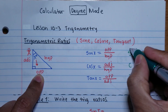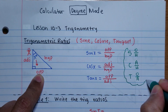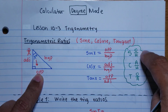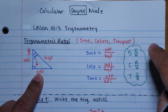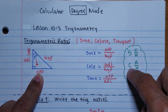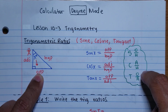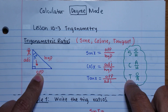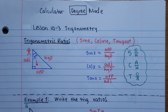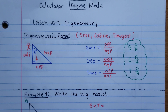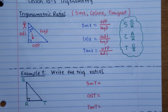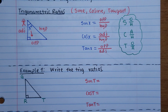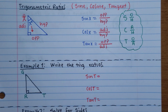To remember which function to use: if you have the opposite and the hypotenuse, use sine; if you have the adjacent and the hypotenuse, use cosine; and if you have the opposite and the adjacent sides, use tangent. Go ahead and pause the video to copy down the next part.